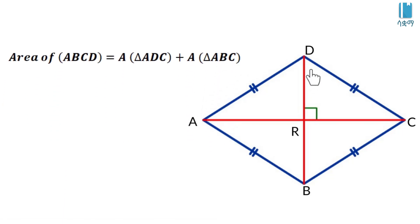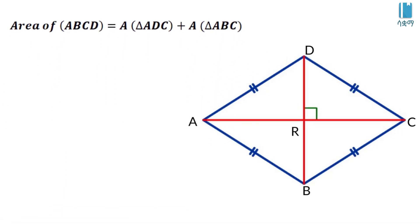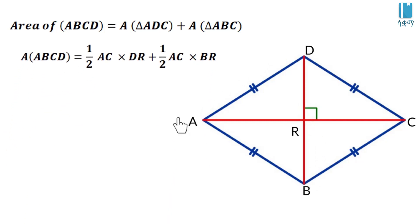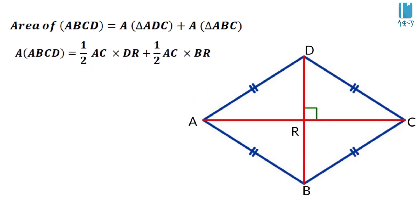This is point DR. So the area is made up of triangles ABC and ADC. The area of triangle ABC is half of AC times BR, and adding the area of triangle ADC gives us half of AC times DR plus BR, which equals half of AC times BD.